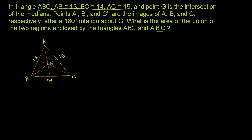So if A is here, and we rotate it 180 degrees about G, it's going to end up — if it's this far from G right now, it's going to be that far again on this side. So A prime is going to be right over there. B is this far right now; if you rotate it 180 degrees, B prime will be about that far. And same thing for C — if you rotate it 180 degrees, C prime goes right over there.